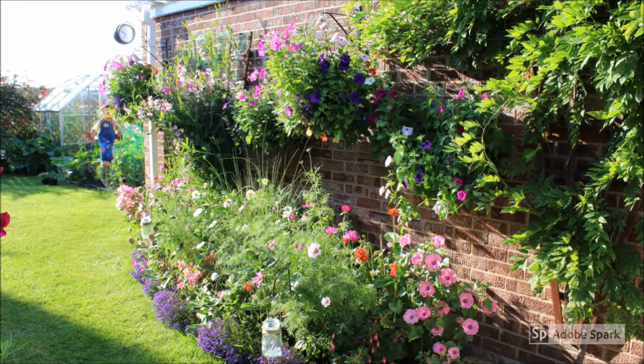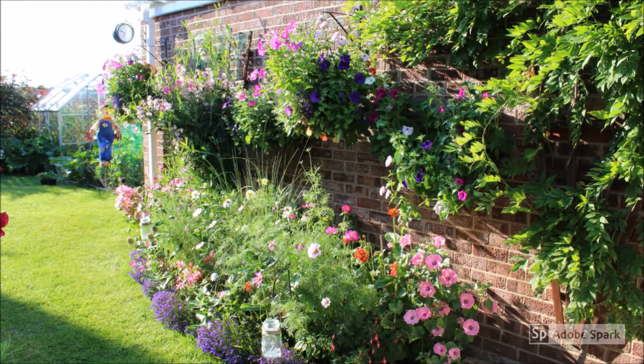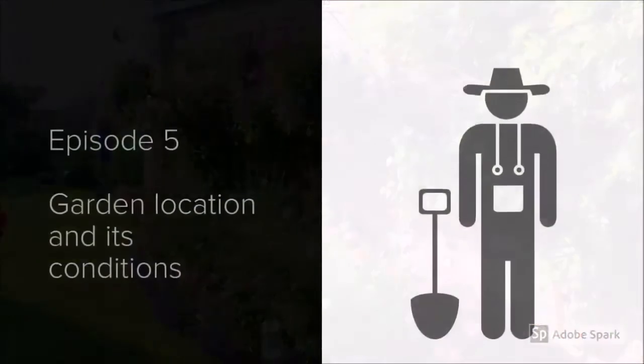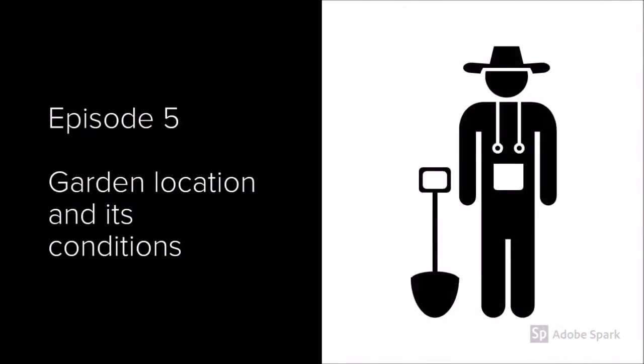Once you understand your garden or plot and its character, you'll be well on your way to becoming a gardener. Let's have a look at how you can understand what conditions you have in your garden or plot. We'll look at light, moisture, temperature, wind, and soil type.